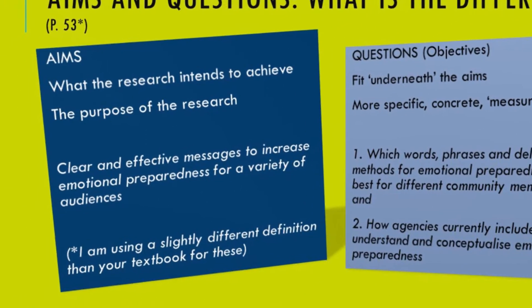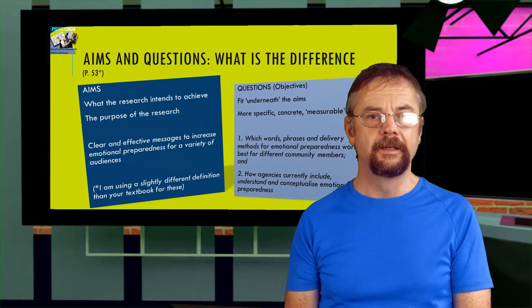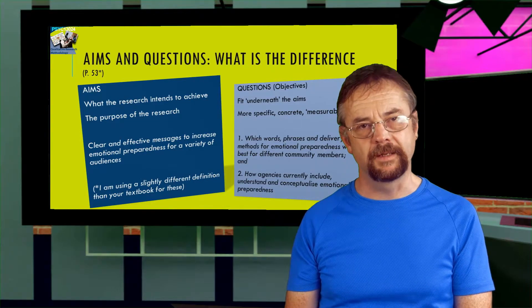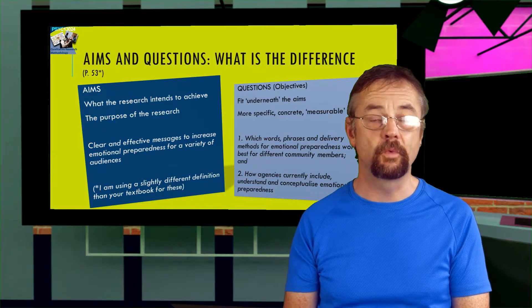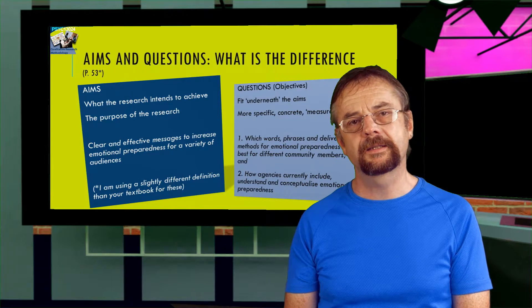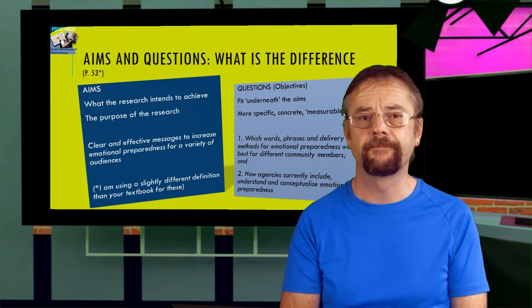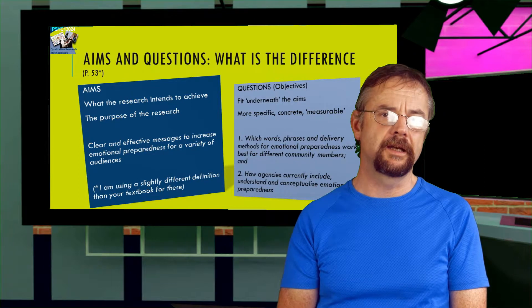Aims are the things that you hope to achieve in your research — it's the purpose of your research. Obviously you want to answer your research question, but that's just one part of your broader aim. Here's an example: a research aim would be wanting to find clear and effective messages that increase people's emotional preparedness for bushfires. The research question would then be 'which words, phrases, and delivery methods work best to emotionally prepare people for bushfires?' We might also ask 'how do agencies currently understand emotional preparedness?' Those are research questions that meet the research aim.